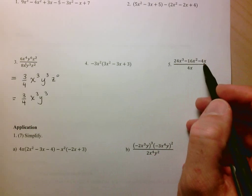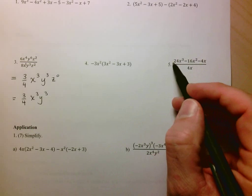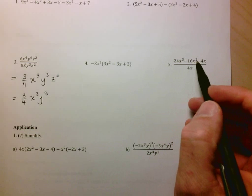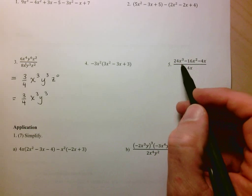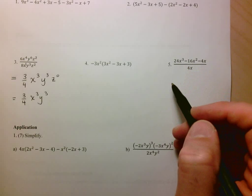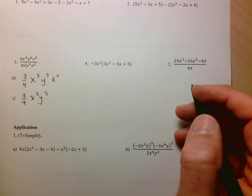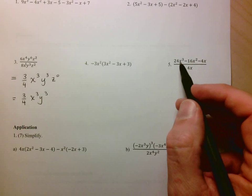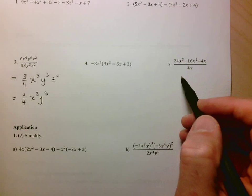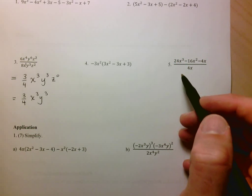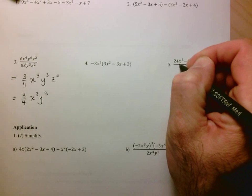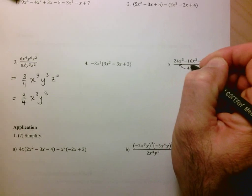What we have here is a polynomial with three terms — remember the terms are separated by additions or subtractions — being divided by 4x. This is treated in the same way as a multiplication of a polynomial by a monomial: you distribute. Here, though, you're dividing, so the distribution is a division to each term in the polynomial.